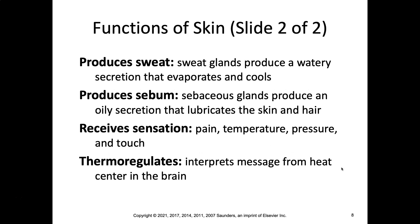It produces sweat. Sweat glands produce a watery secretion that evaporates and cools your body. It produces sebum — sebaceous glands produce an oily secretion that lubricates the skin and hair, keeping it from getting too dry. It receives sensation; think about your fingertips — you can sense pain, temperature, pressure, and touch, all over your skin. It also has thermal regulation ability, interpreting messages from the heat center in the brain and adjusting accordingly.